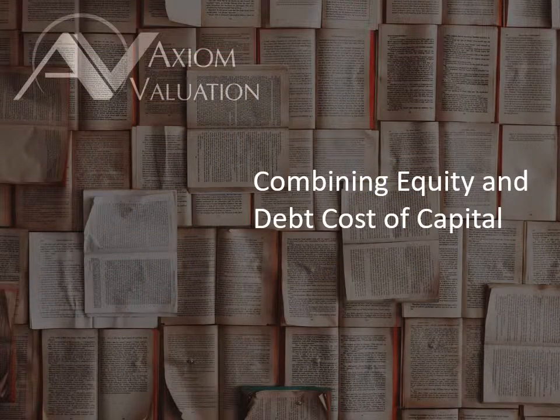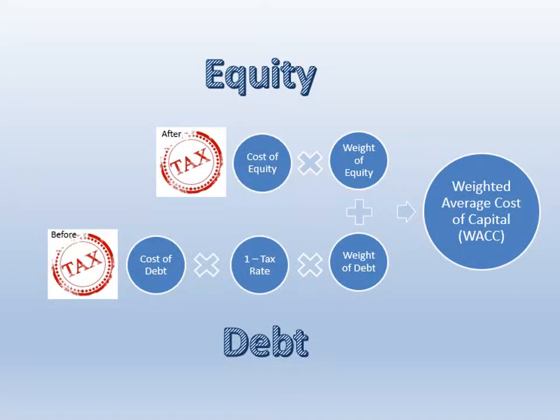Now we discuss combining equity and debt cost of capital to form the weighted average cost of capital, or WACC. Let's put the components together — the equity cost and the debt cost. In the slide before you, you'll see how this is done. There are weights: one associated with equity and the other associated with debt. You should also notice that the cost of debt is adjusted for the fact that interest expense is tax deductible. The rate of return on equity is an after-tax cost of equity, while the cost of debt as typically measured in the market is before tax. So we have to make this adjustment to calculate the weighted average cost of capital.